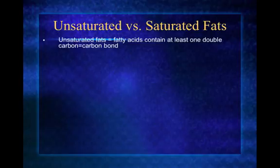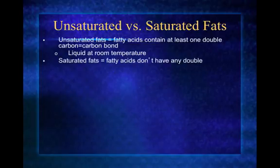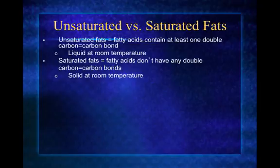Unsaturated fats have fatty acids that contain at least one double carbon-carbon bond. Carbon chains can have single, double, or even triple bonds. You can tell if a fat is unsaturated because at least one of the three fatty acids has a carbon-carbon double bond. These unsaturated fats are liquid at room temperature. Saturated fats have fatty acids with no double carbon-carbon bonds — all their carbon bonds are single bonded — and these tend to be solid at room temperature.